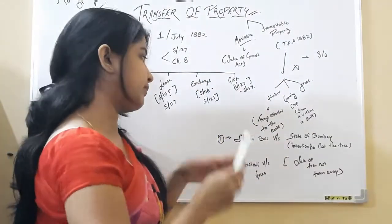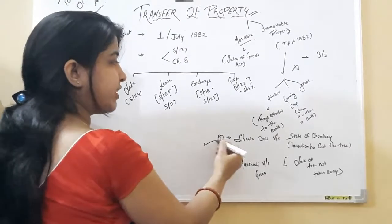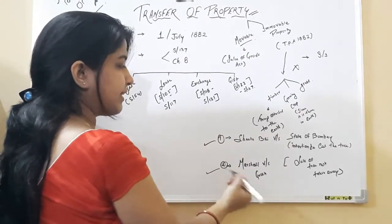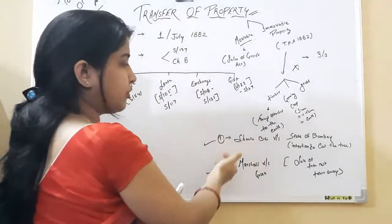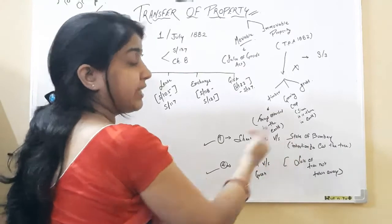Two cases are given in your book. One is Santa Hai versus State of Bombay and second case is Marshall versus Green. In Santa Hai case, the key is intention.